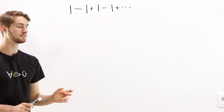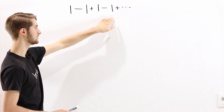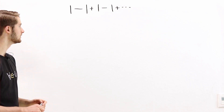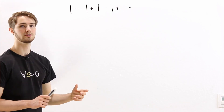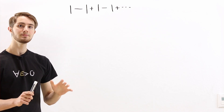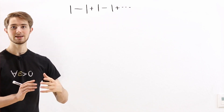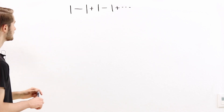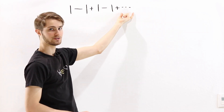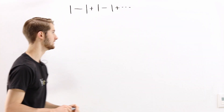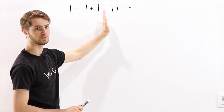Let's start from the beginning. Our goal is to find the value of 1 minus 1 plus 1 minus 1 and so on to infinity. But we don't really know how to add up infinitely many things. We do know how to add up finitely many things. So maybe we should start by taking finite sums and see if that can tell us anything about the infinite sum.